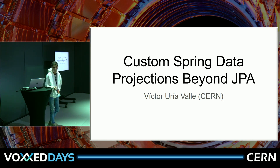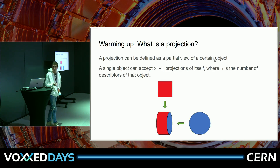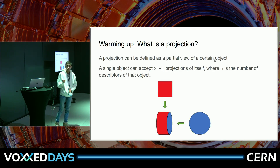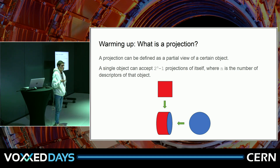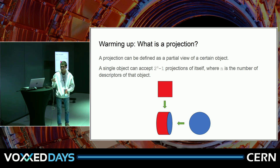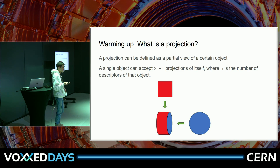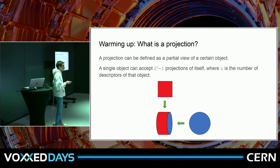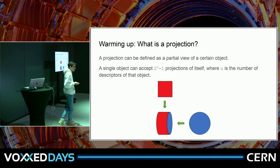First I would like to show what a projection is, because maybe some people don't know. Imagine we have an object, say a cylinder like in the picture. There are many ways of seeing a cylinder — from the top it looks like a square, from the side it looks like a circle. So yes, it can be defined as a partial view. In the case of a Java class, it would be taking part of the fields, and as a small mathematical fact, if a class has n fields, there are 2 to the power of n minus 1 possible projections.